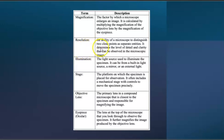For resolution, this is the ability of a microscope to distinguish two close points as separate entities. It determines the level of detail and clarity that can be observed in the microscopic image. Illumination is the light source used to illuminate the specimen. It can be from a built-in light source, a mirror, or an external light.